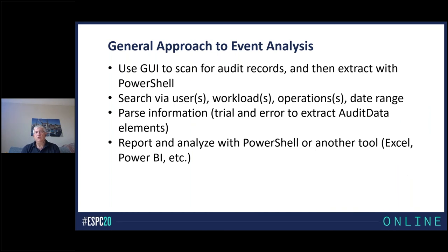My general approach when looking for events through PowerShell is to first use the GUI for a quick scan — I'll have a general idea of the kind of event I want and use the GUI to find the exact name of the operation, which is one of the standard fields. Then I'll move to PowerShell where I'll start a search including details like the users I'm interested in, the workloads, the operations, the date range, et cetera. That can return up to 5,000 records at a time.